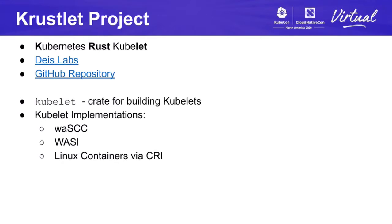Krustlet is an open source project being run by Deis Labs. It stands for Kubernetes Rust Kubelet and involves a number of interesting components. The first is the Kubelet crate, which seeks to implement common Kubelet functionality and expose a flexible API with which developers can build custom Kubelets. This allows Kubelets to be developed for new architectures and types of workloads. The second major component of the project are two Kubelet implementations for running WASM workloads, one using the WASC runtime and the other using WASM time. These are exciting because you can compile to WASM using Rust, upload an OCI-compliant image to Azure, and then deploy these workloads in Kubernetes using Krustlet. These images are very small compared to Linux container images and isolation is achieved using the WASM runtimes themselves, resulting in a very performant and efficient way of running microservices.